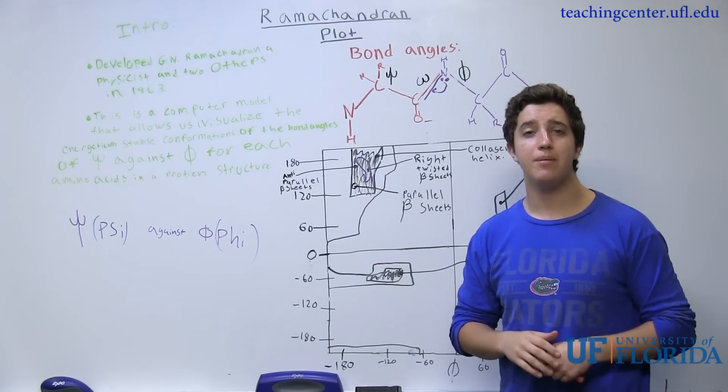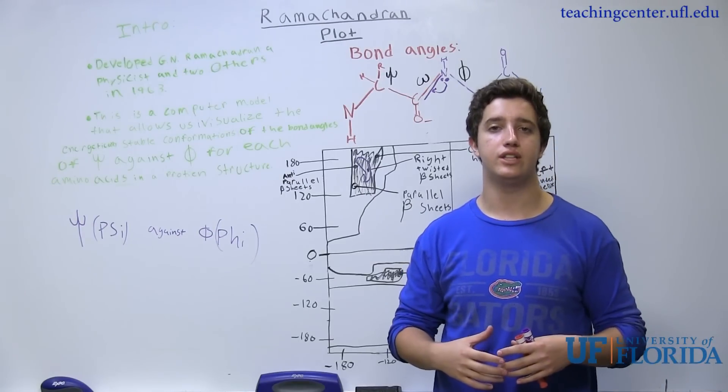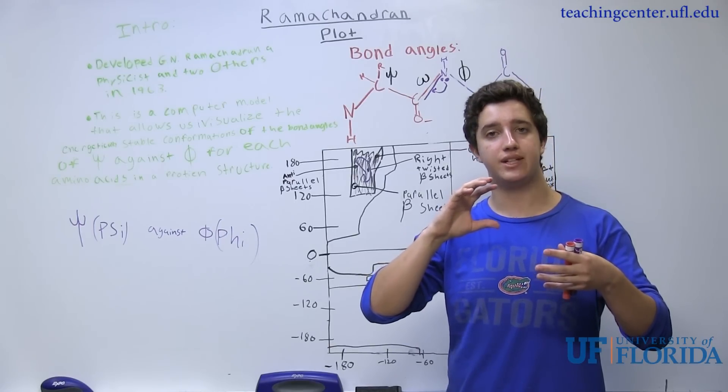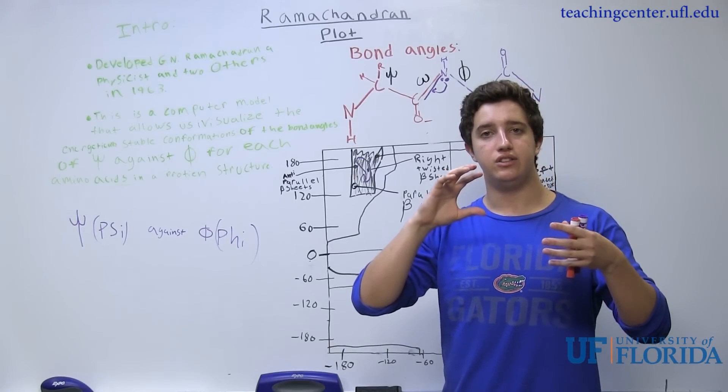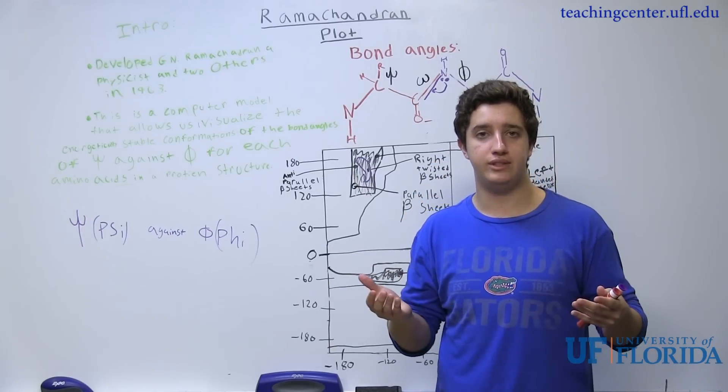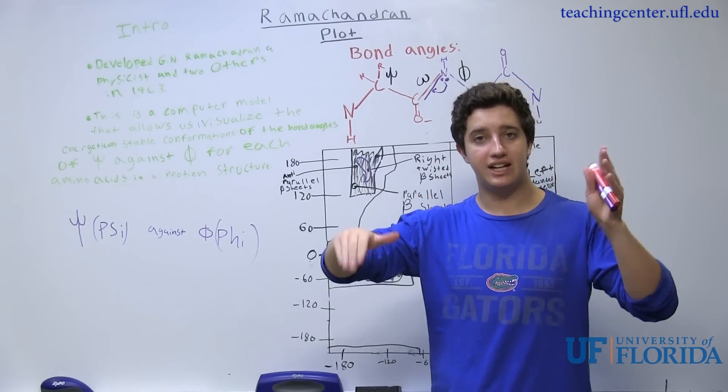Now, why do we care? We care because this is going to cause the atoms connected to the omega no freedom to rotate. So they're not able to rotate. They're going to be stuck at that planar position.